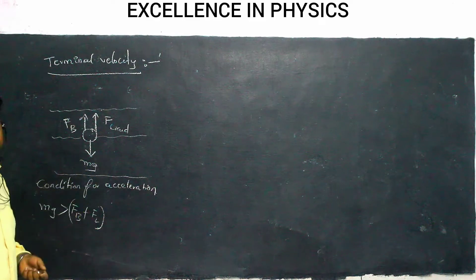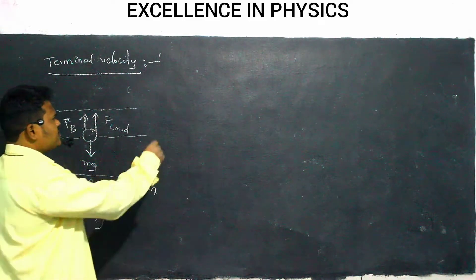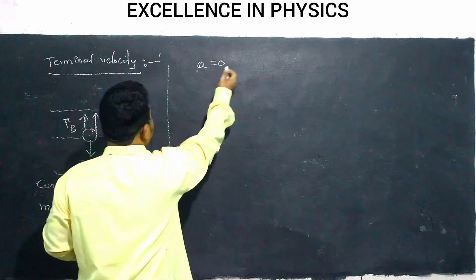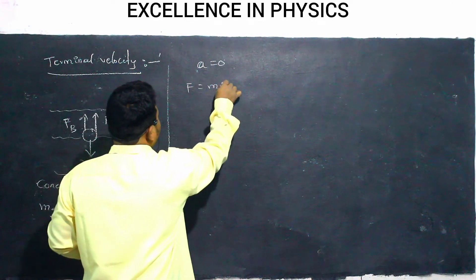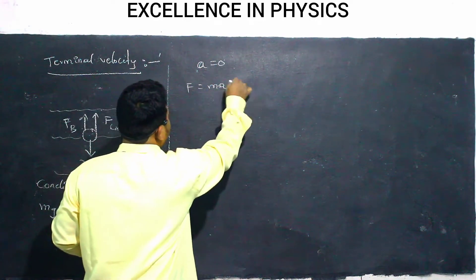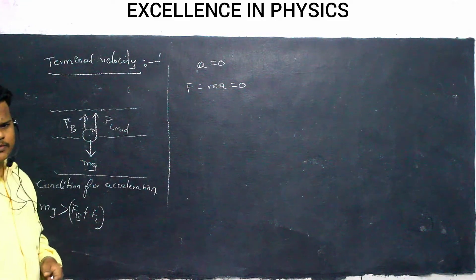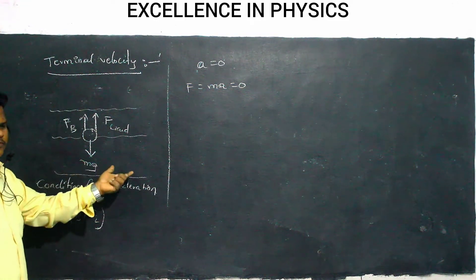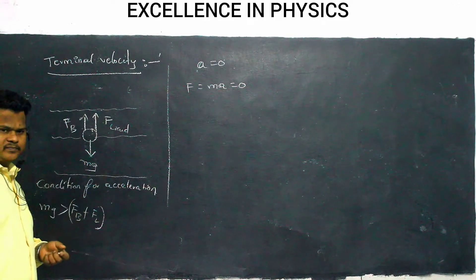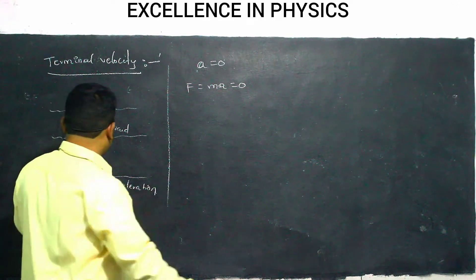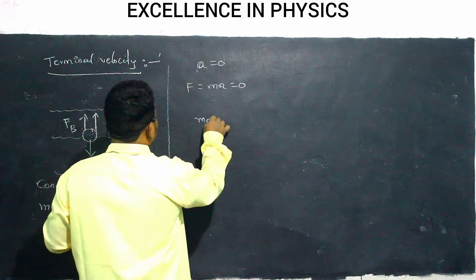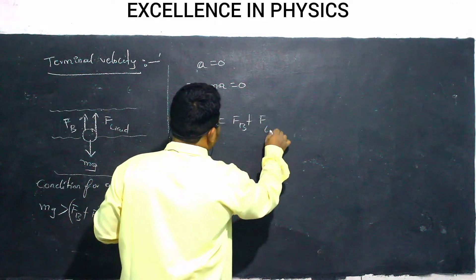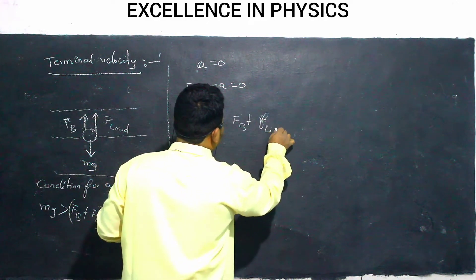What is the condition for the body to travel with the same speed? Same speed means acceleration is zero. Acceleration is zero means F = ma gives net force equal to zero. Net force zero means upward forces and downward forces are equal. Therefore, mg equals force of buoyancy plus frictional force due to liquid.